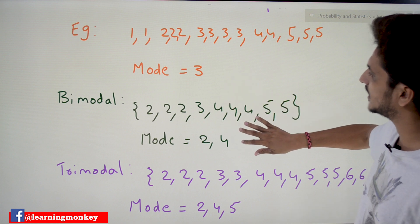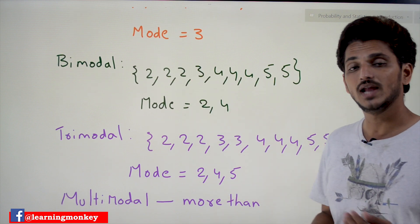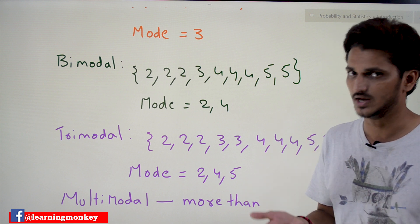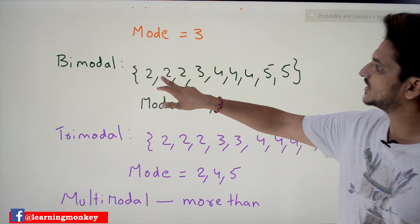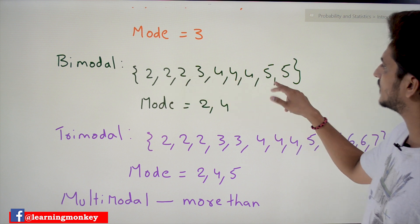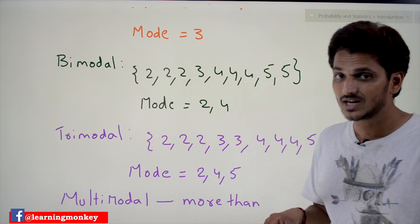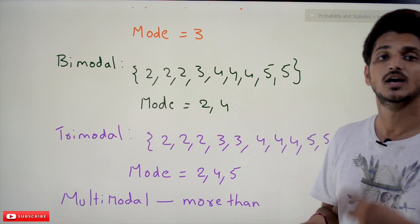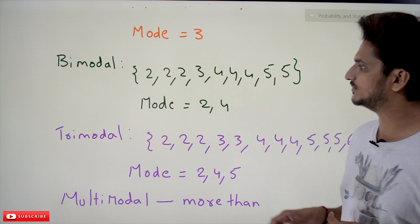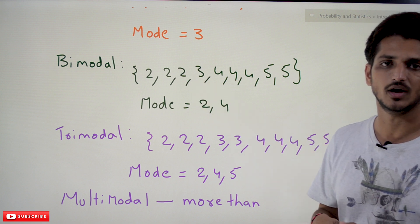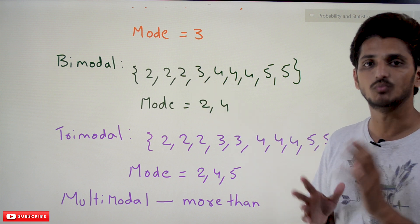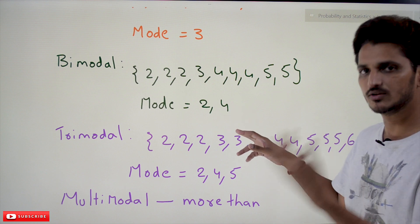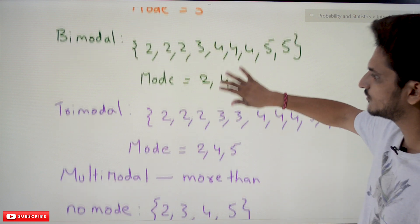Now we need to understand some more concepts regarding mode. Mode will not only have a single value — you can have two values or multiple values. For example, in the data 2, 2, 2, 3, 4, 4, 4, 5, 5, both 2 and 4 each appear three times. So both are considered mode values: mode = 2, 4. When you have two mode values, we call it bimodal.